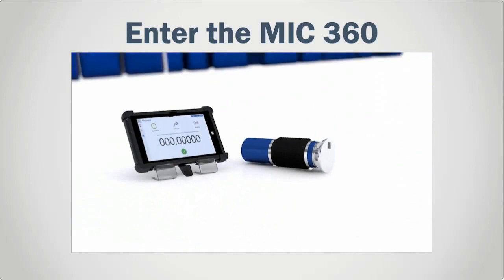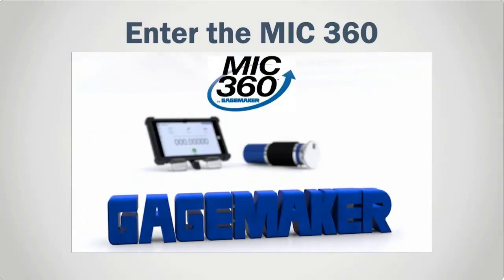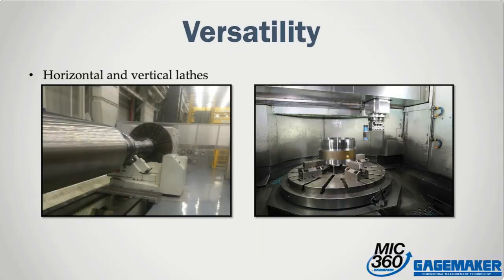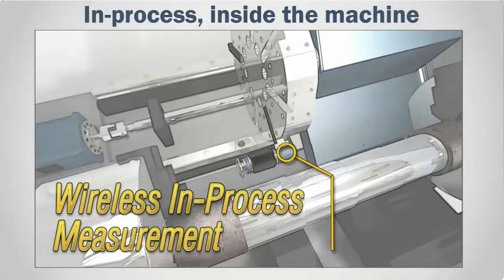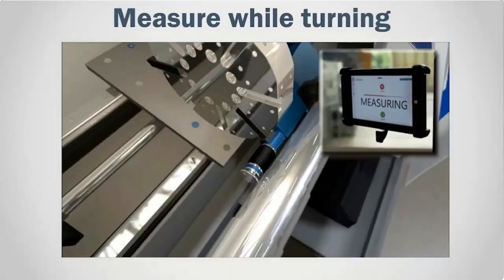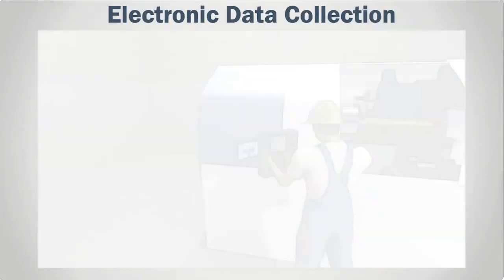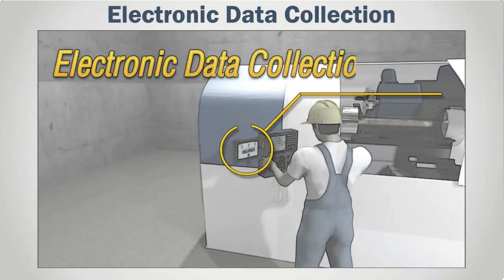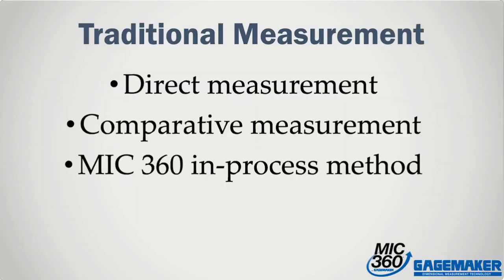The MIC360 measures any diameter from as little as a few inches to virtually any size you can machine. The versatility includes the ability to mount on a vertical or horizontal lathe, OD/ID grinder, or any other machine tool fixture that rotates a part. By in-process, we mean it all happens wirelessly inside the machine while the part is turning, and at a push of a button. There is no need to stop the spindle to take a measurement, because all recordings are captured electronically. These benefits translate to a more repeatable, safe, and cost-effective measurement.